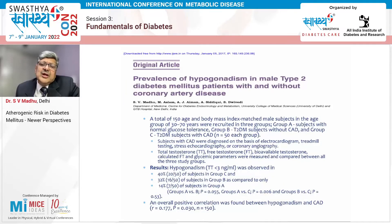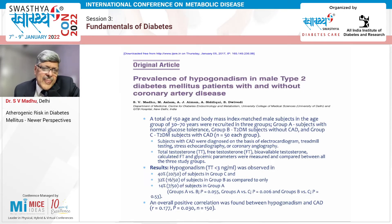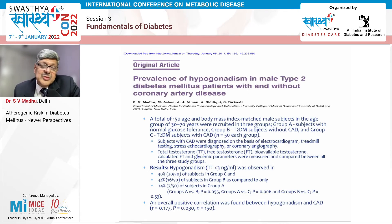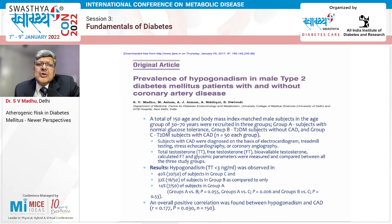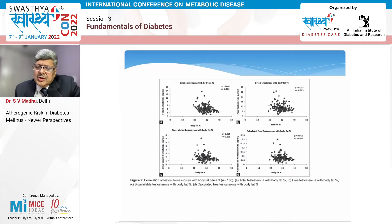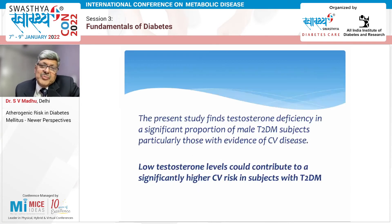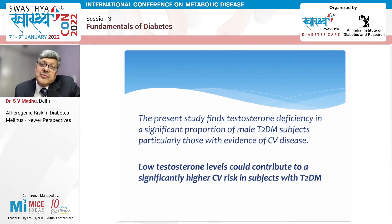We compared testosterone levels in patients of diabetes with and without coronary artery disease and found hypogonadism in 40% of those with microvascular disease, 32% of diabetics without microvascular disease, compared to only 14% of controls. An overall positive correlation was found between hypogonadism and CAD, and testosterone parameters also correlated with body fat percentage.